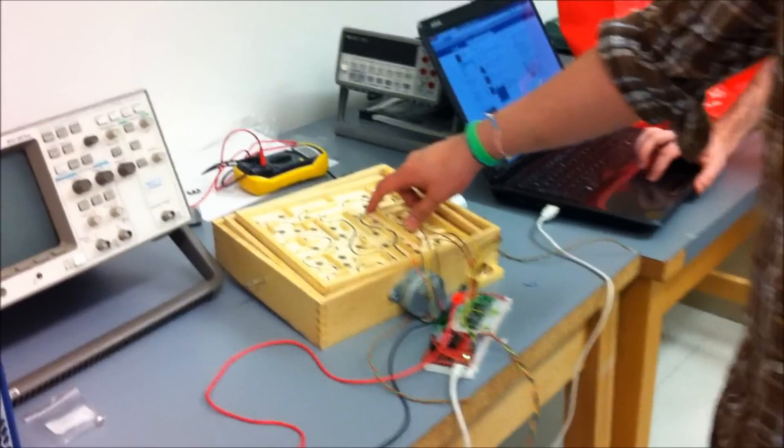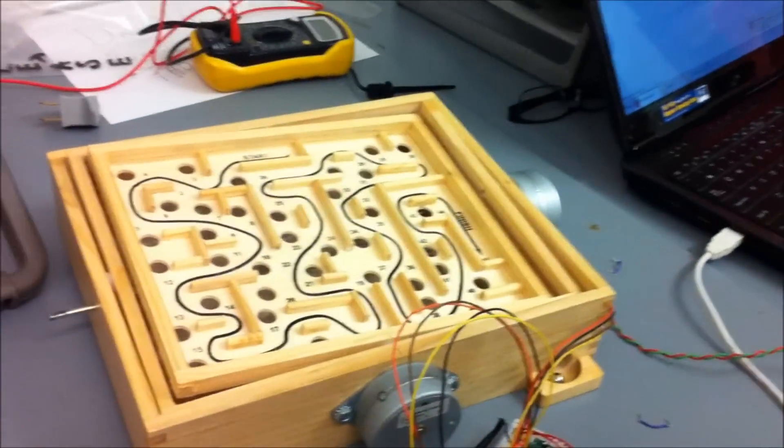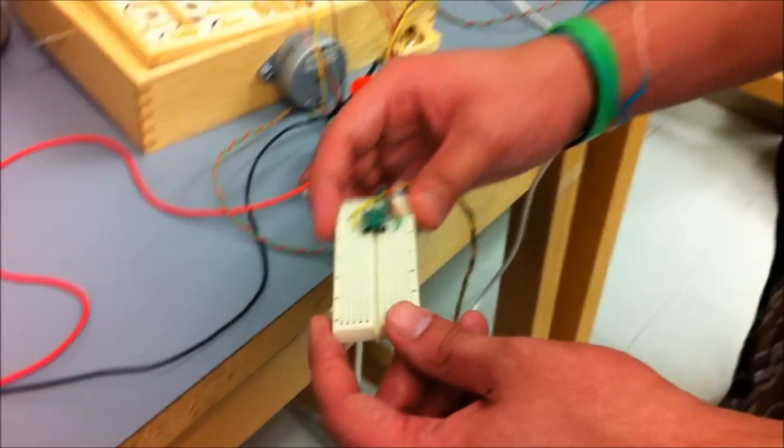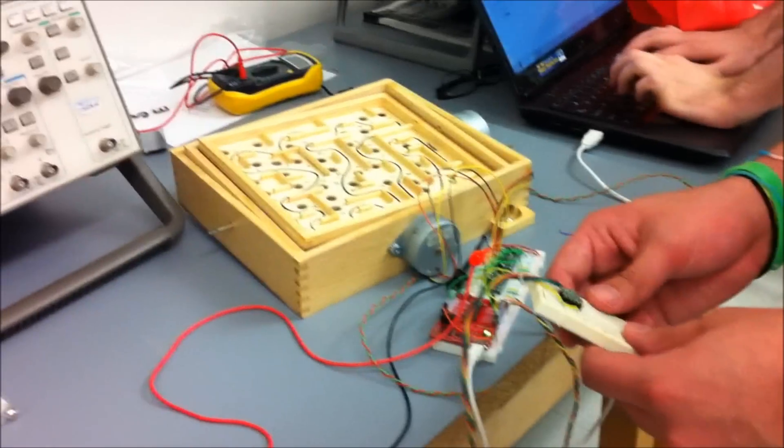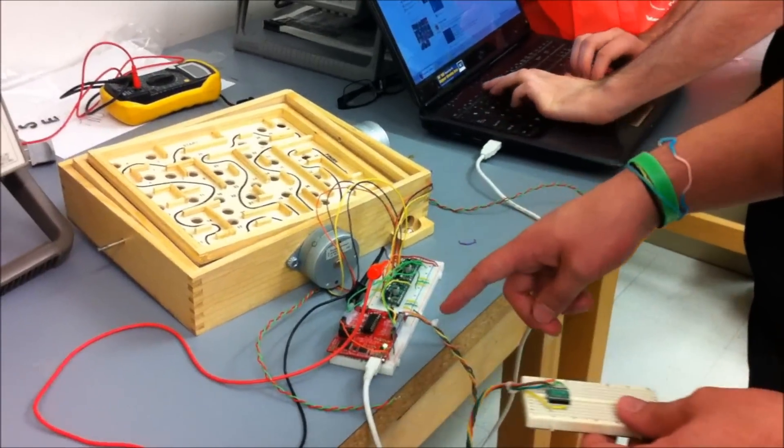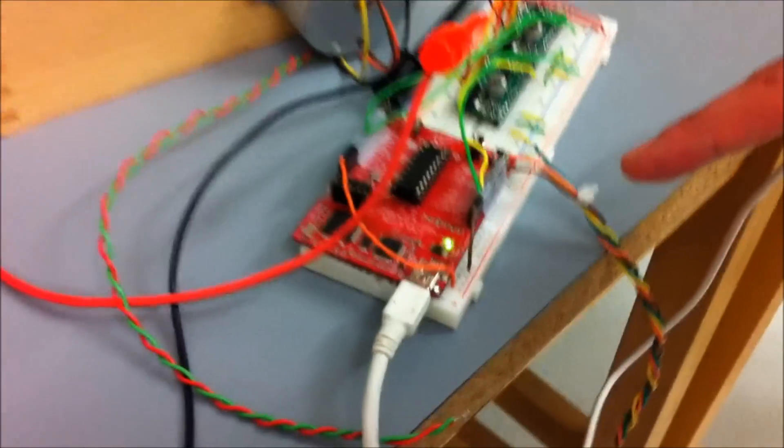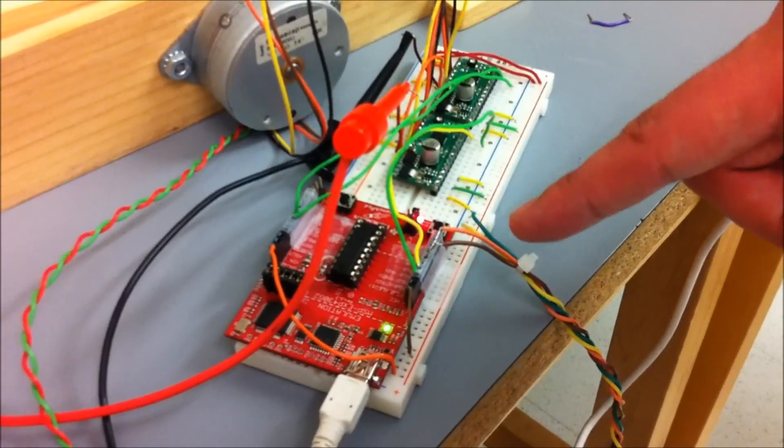The goal of our project was to take the marble maze and modify it so that our user could control it with hand motions through the use of an accelerometer. We used a Freescale 3-axis accelerometer that output analog values and it went to our MSP430, which we ran off the Launchpad dev board.